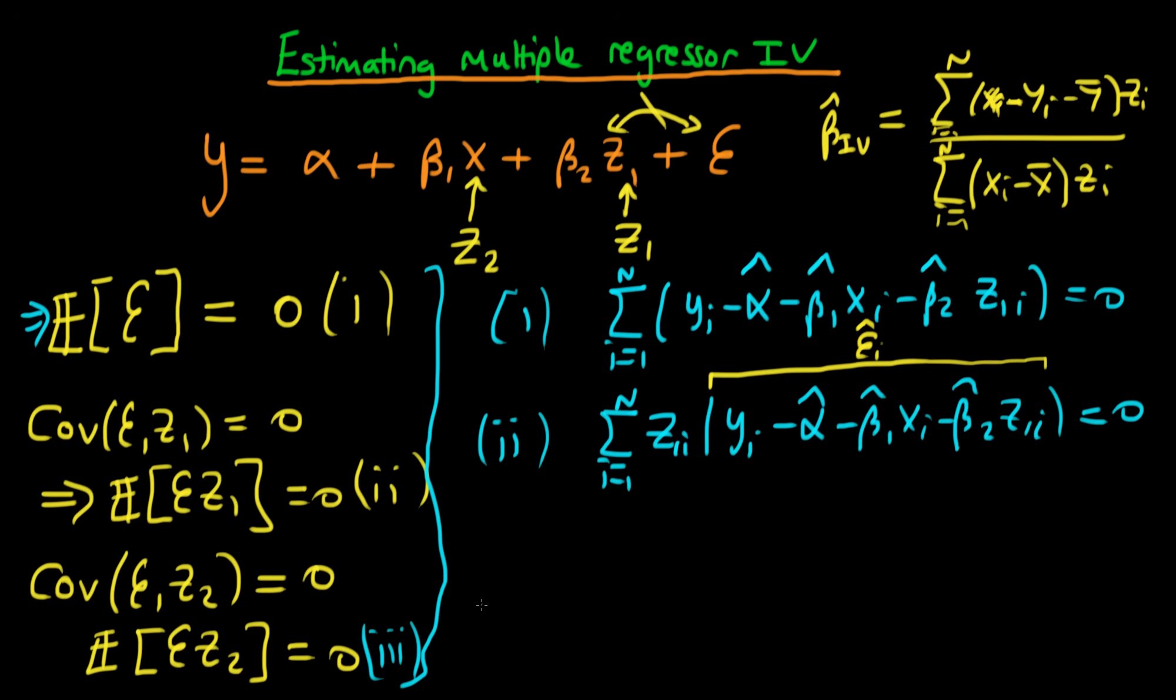And then our final condition just says that the sum from i equals 1 to n of z2i times this estimated error which is yi minus alpha hat minus beta1 hat xi minus beta2 hat z1i has to be equal to zero. And again the term in the parenthesis is the estimated error.